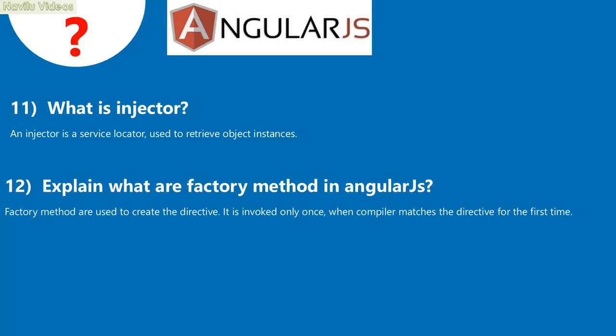What is an injector? An injector is a service locator, used to retrieve object instances. What are factory methods in AngularJS? Factory methods are used to create the directive. A factory method is invoked only once, when the compiler matches the directive for the first time.